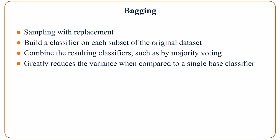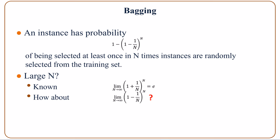Majority voting simply takes the majority of votes. For example, if you have five classifiers and three of them classify an example as 1 and two classify it as 0, you take the majority vote, which is 1, and assign that to the example. This method greatly reduces the variance compared to a single base classifier.